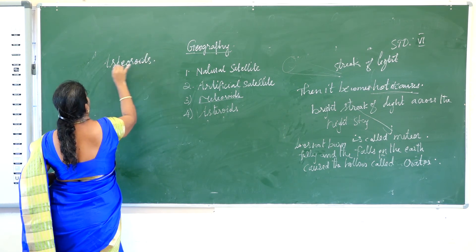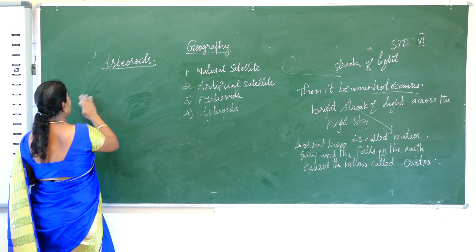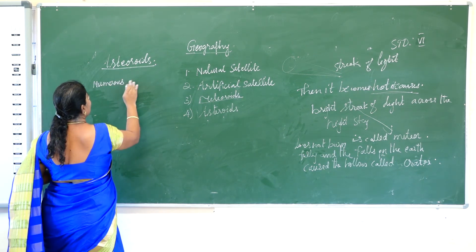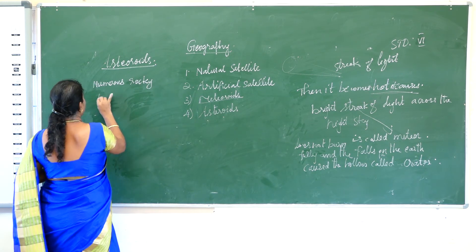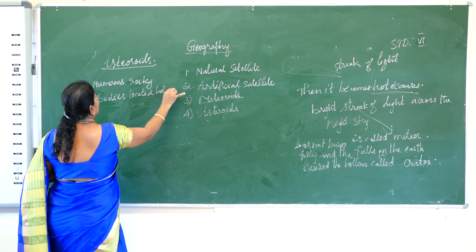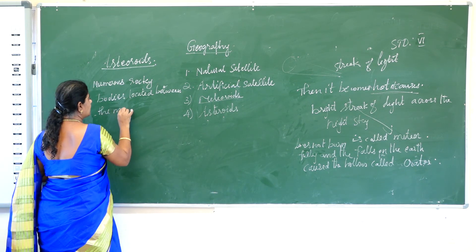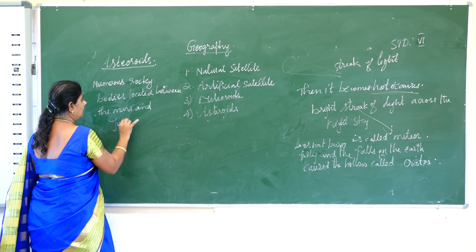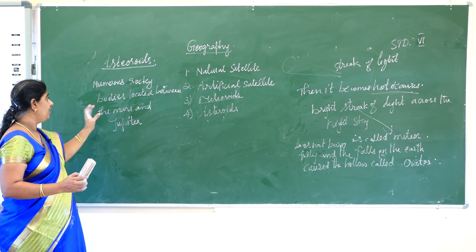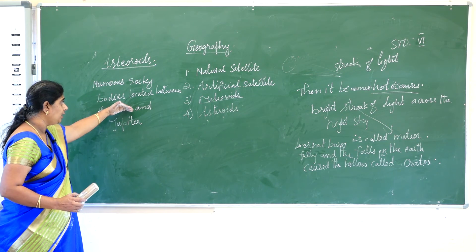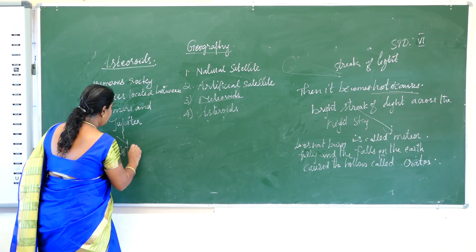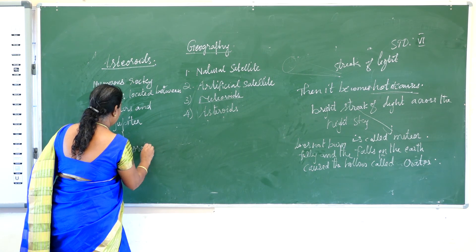What are asteroids? There are numerous rocky bodies located between the planets Mars and Jupiter. These rocky bodies are called asteroids.